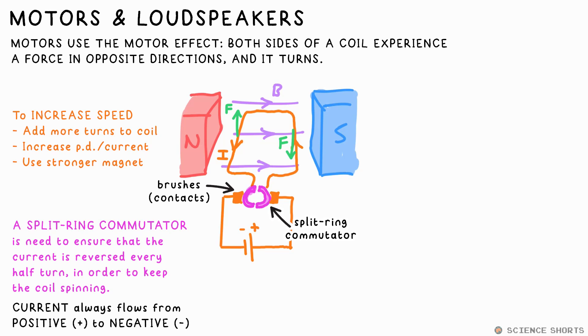To make a motor turn faster, you can increase the current, use a stronger magnet, or add more turns to the coil. So, essentially, there's more wire experiencing the force.